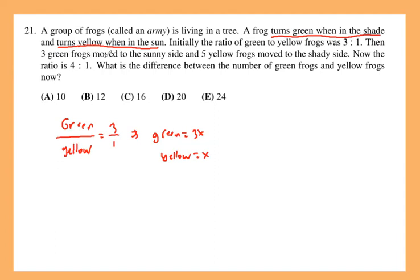And then 3 green frogs move to the sunny side. So let's keep that in mind. This is green and this is yellow. So there will be 3 green frogs that will move to the sunny side.